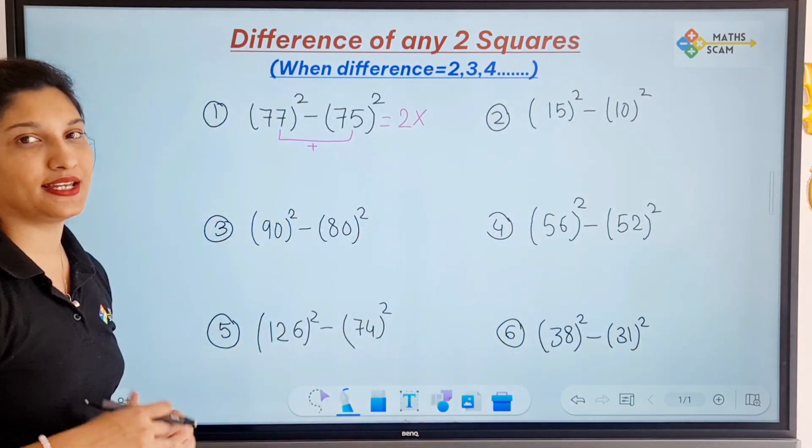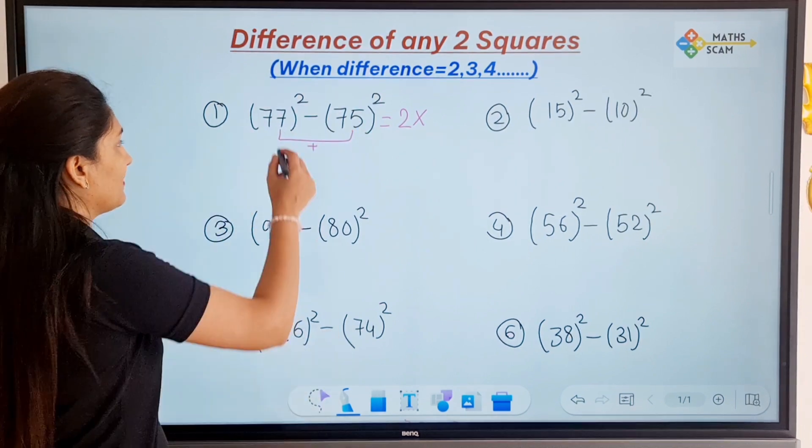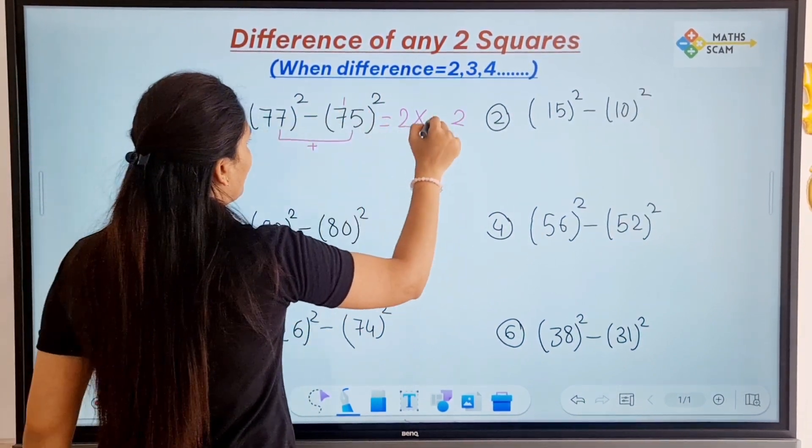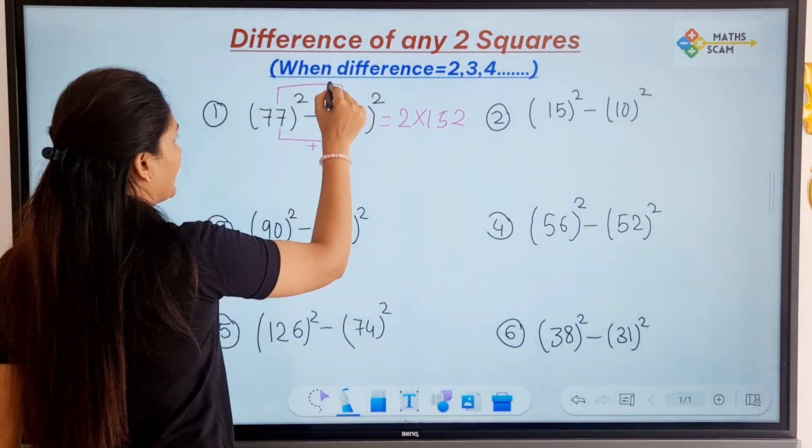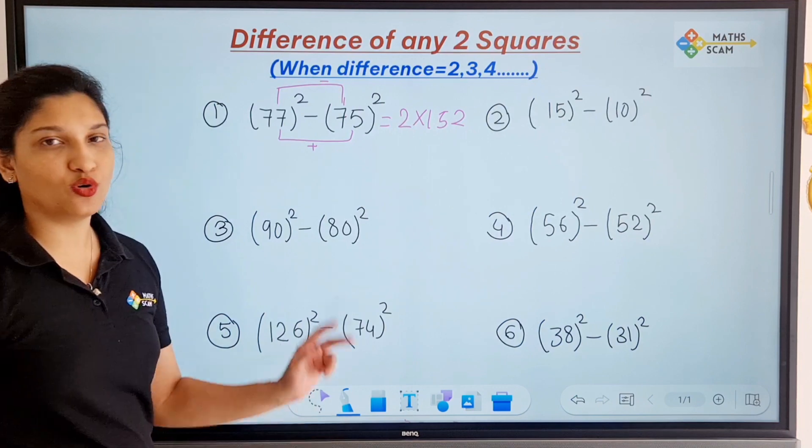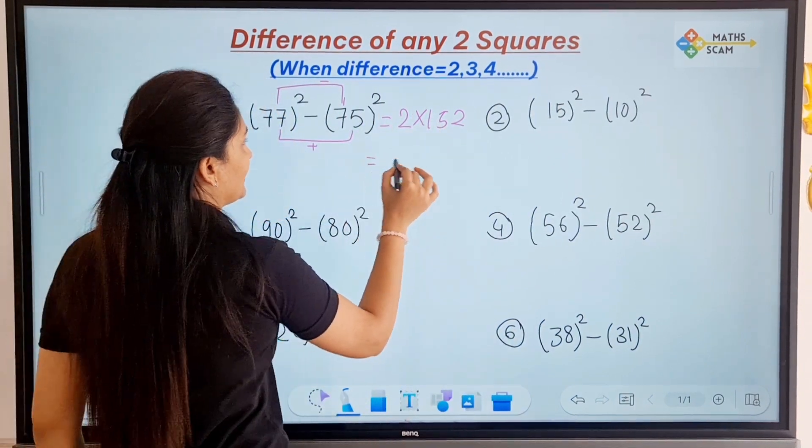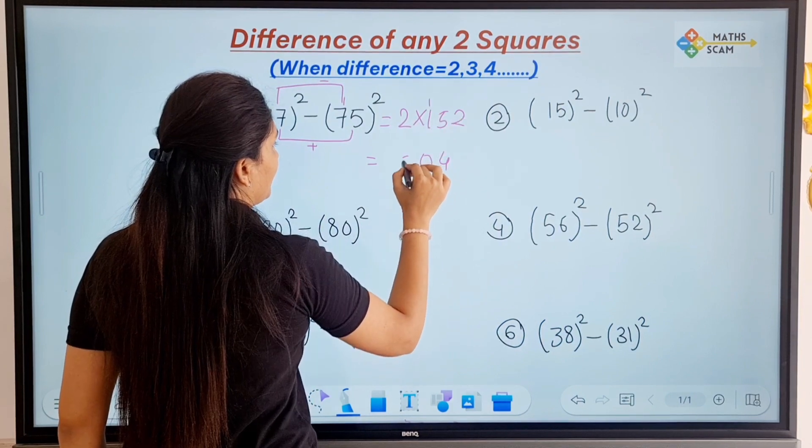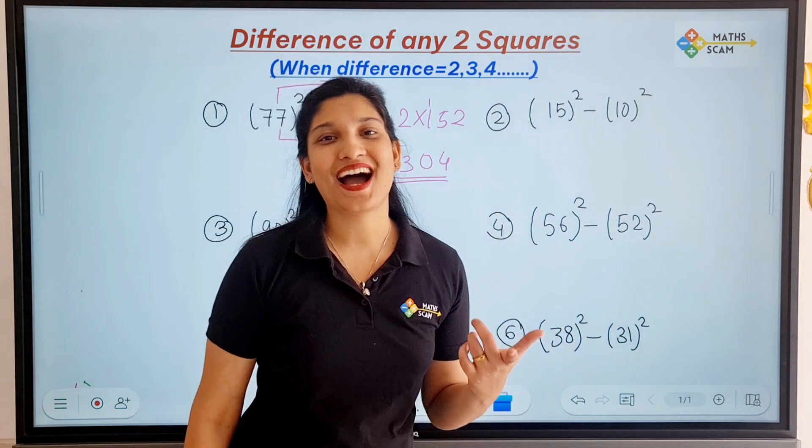We skip that one step of difference and multiplication. So 7 plus 5 is 12, 1 carry 40 and 1 is 15. So what we did is we did subtraction and addition both, and both the answers we are going to multiply. So just multiply, answer will be 4, 5, 10 and this is going to be 304.